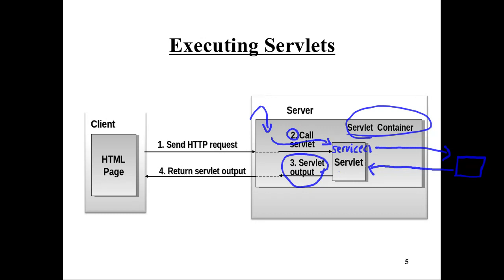If instead of implementing the service interface we extend the HttpServlet class, then the service method is already defined in that class. Instead, we have to override methods called doPost, doGet, and so on — there is one for each HTTP method. The HttpServlet class interprets the request, checks which HTTP method was used, and invokes the appropriate method. We have to override them to provide an implementation handling that particular request. If we do not override the method, the request will not be allowed.